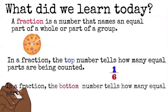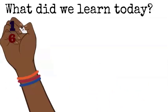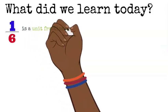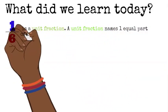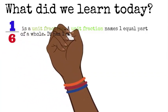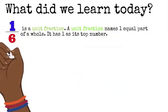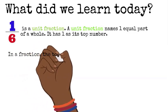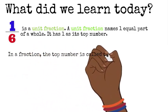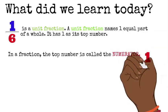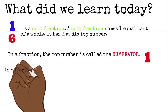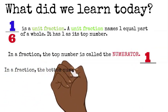In a fraction, the bottom number tells me the total equal parts in the whole. And then we consider one-sixth to be a unit fraction. A unit fraction names one equal part of a whole. It has one as its top number. And in a fraction, the top number is called the numerator. In a fraction, the bottom number again is called the denominator.